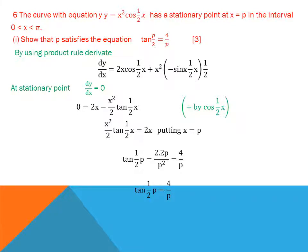Setting dy/dx = 0 and dividing by cos(½x) to obtain the tan form: 2x·cos(½x) is cancelled when divided by the cosine term, and the sine term becomes tan(½x). Simplifying: 2x − (x²/2)·tan(½x) = 0, then tan(½x) = 2·(2p)/p² = 4/p, giving tan(p/2) = 4/p as required.